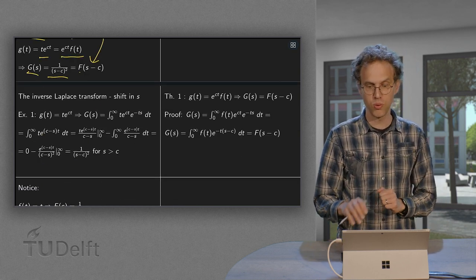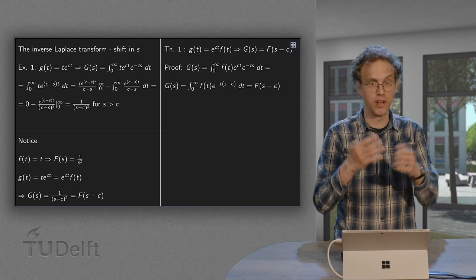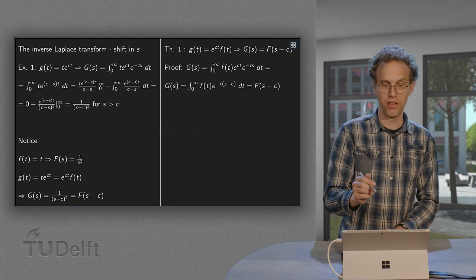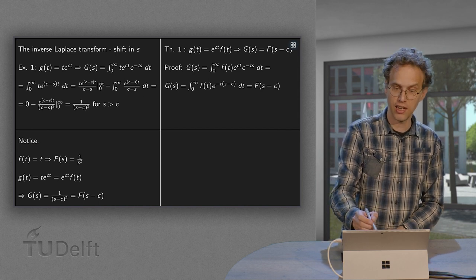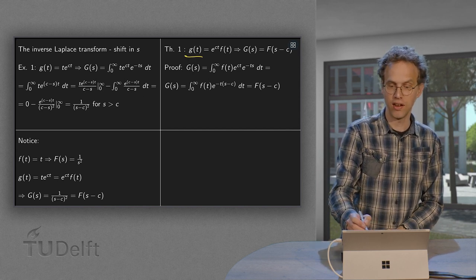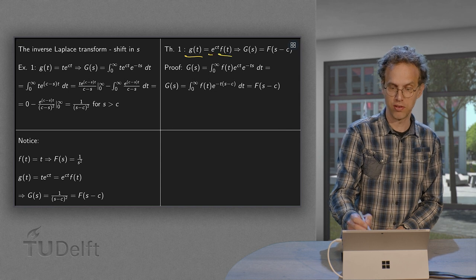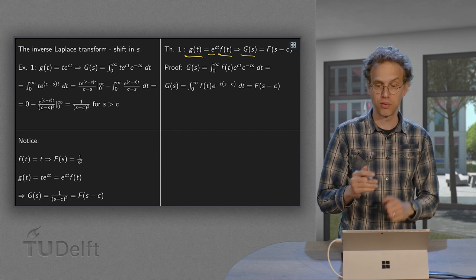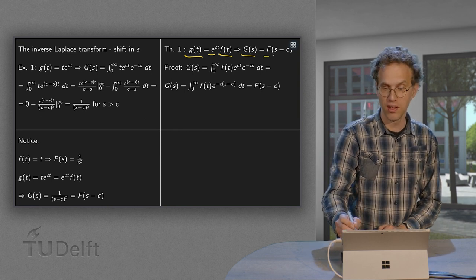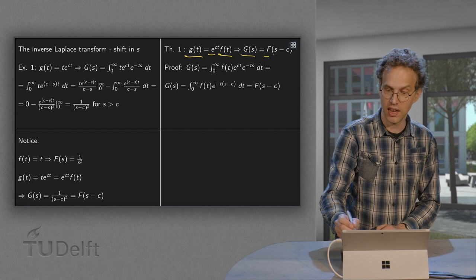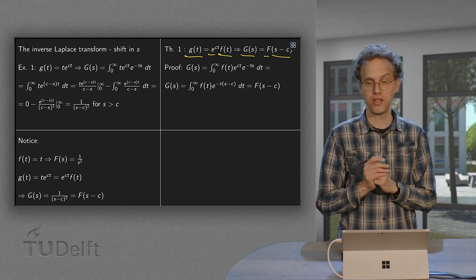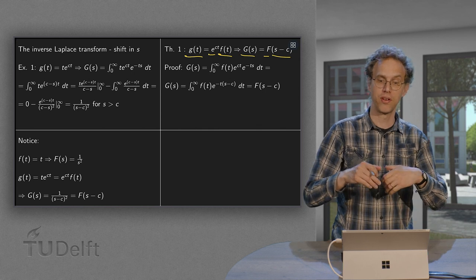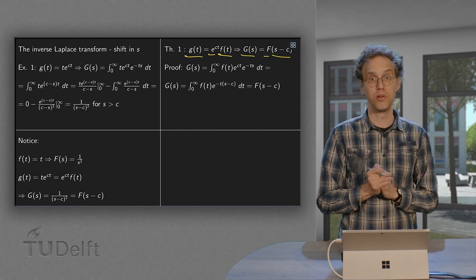Well, is this true more generally? It is true, of course, for this one example, but what happens more generally? For that we have a theorem, which says indeed if our g(t) equals some F(t) times e^(ct), then our G(s) can be found in terms of F(s), and then we have to plug in s-c at the place where s was. So if we know our F(s), we can immediately compute our G(s).